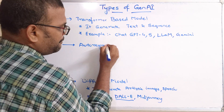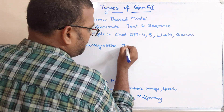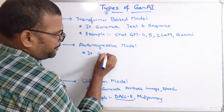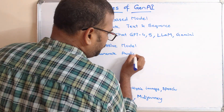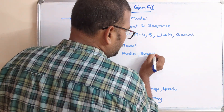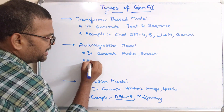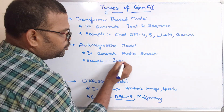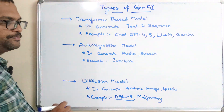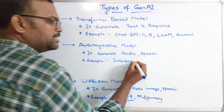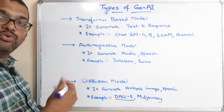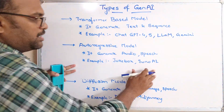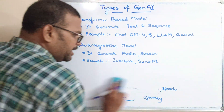The fifth type is the Auto-Regressive Model. It is mainly used to generate audio and speech. Example tools for this type are Jukebox, which generates audio, and Suno AI — we have seen this Suno AI tool previously. These are examples of auto-regressive models used for generating audio.